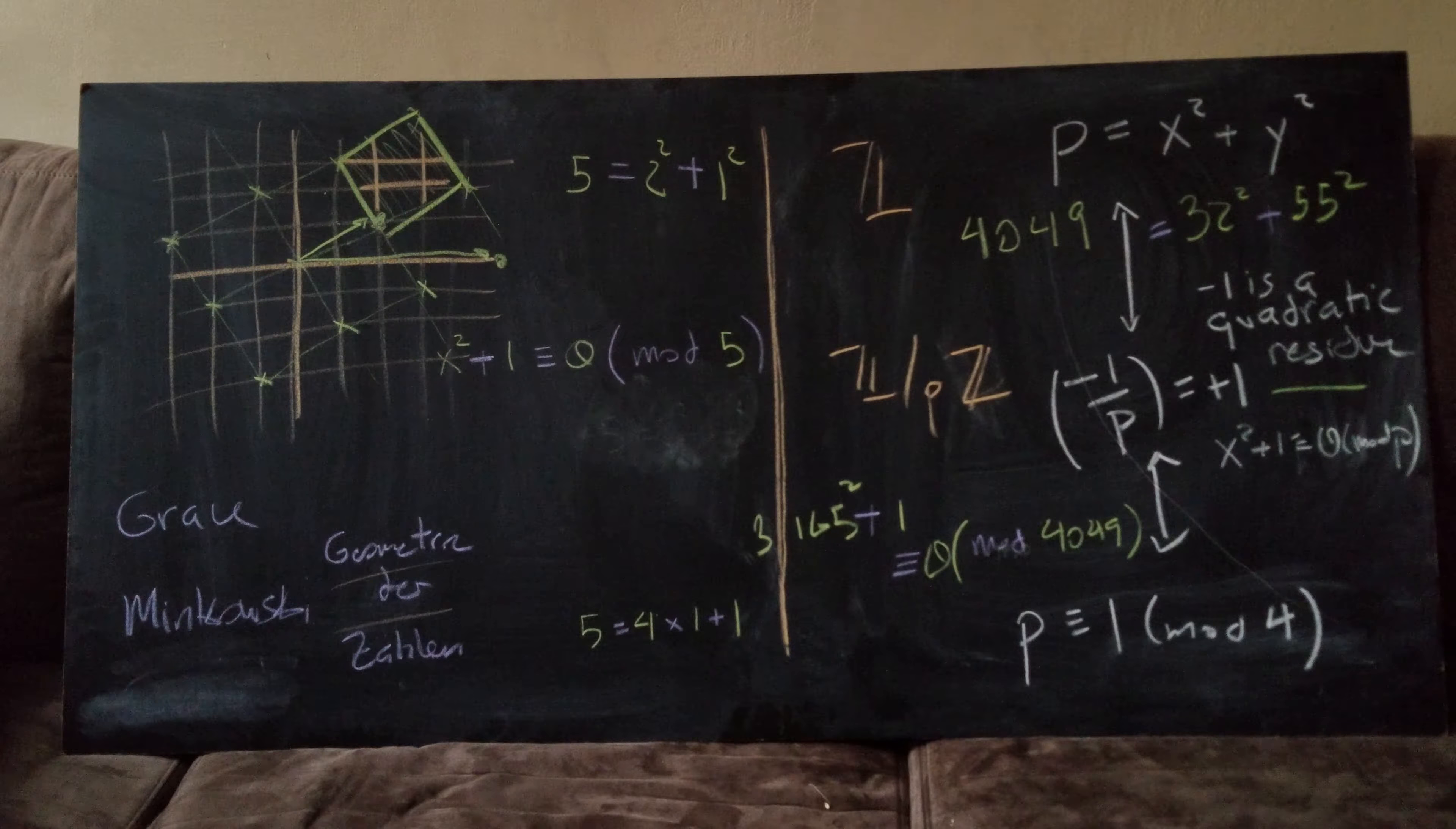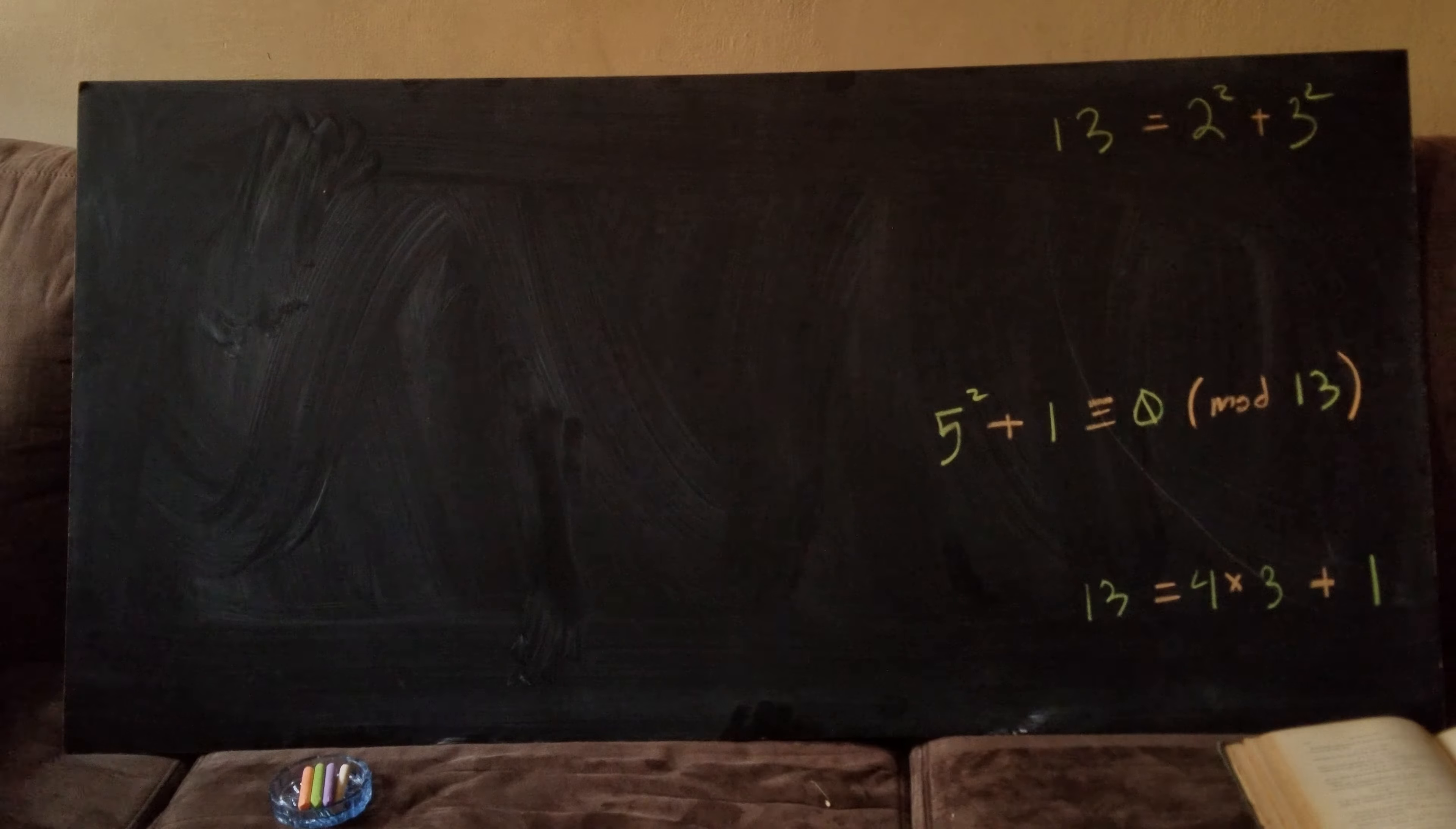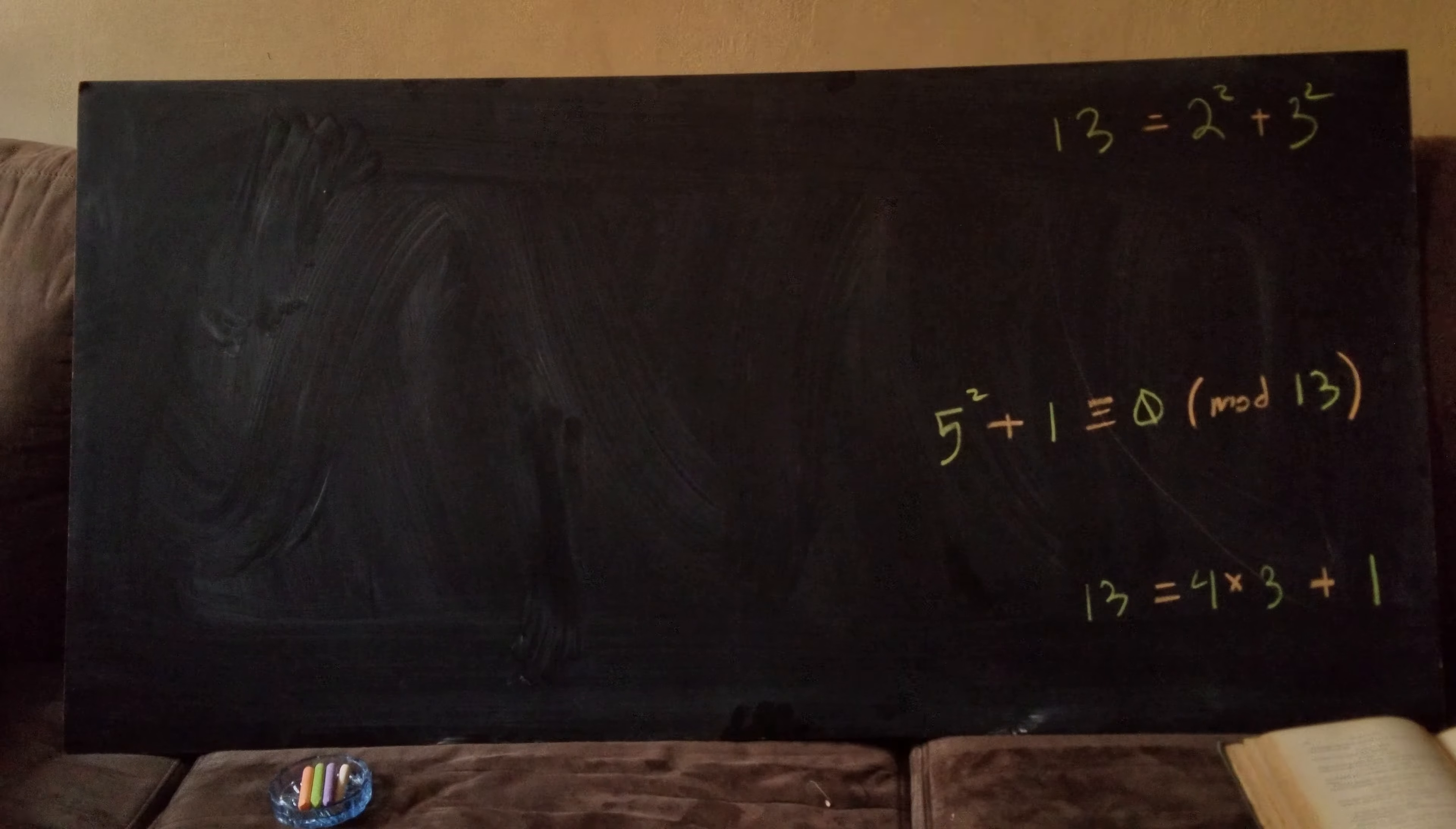We still have a little bit of time, let's do 13. So here are three reasonable arithmetic statements and try to draw some pictures about them. 13 is 4 times 3 plus 1. 5 squared plus 1, that's 25 and 1, that's 26 which is indeed 0 mod 13. And 13 is 2 squared plus 3 squared, it's 4 plus 9. So all three statements check out.